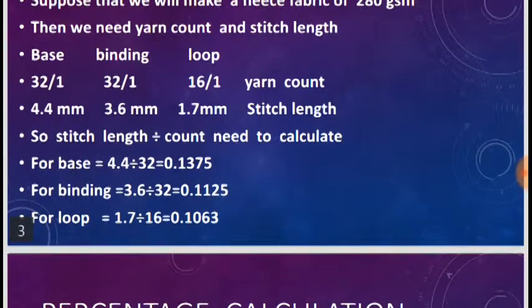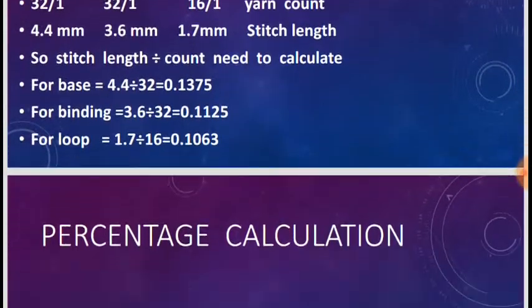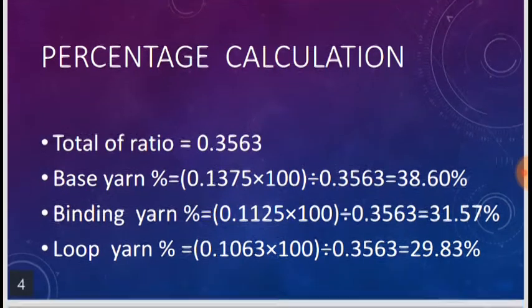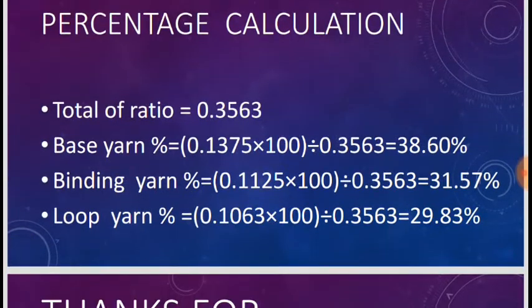This is the theory ratio. Now we come to percentage calculation. Total of ratio equals 0.1375 plus 0.1125 plus 0.1063 = 0.3563.